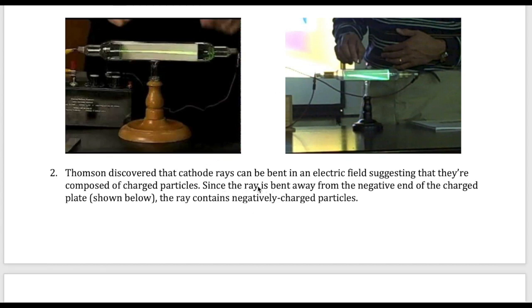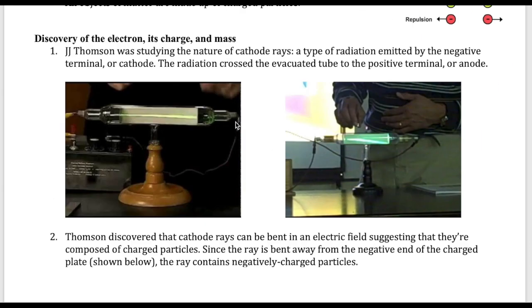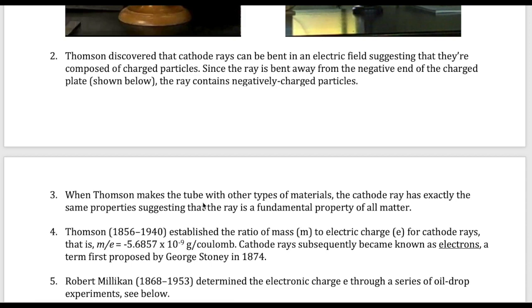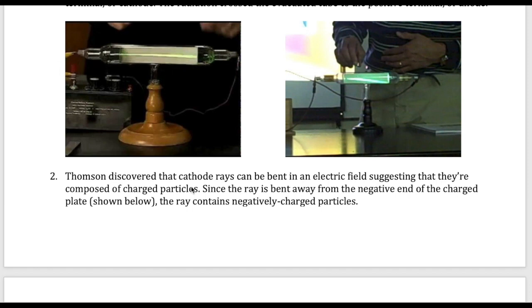Because the ray is bent away from negative charges, Thomson concluded, because of this electrostatic idea, that the ray itself must contain negatively charged particles because negative and negative repel. Thomson also found that the ray shows up not just with one type of material, but with all kinds of material. That means this ray must be a fundamental component of all material.